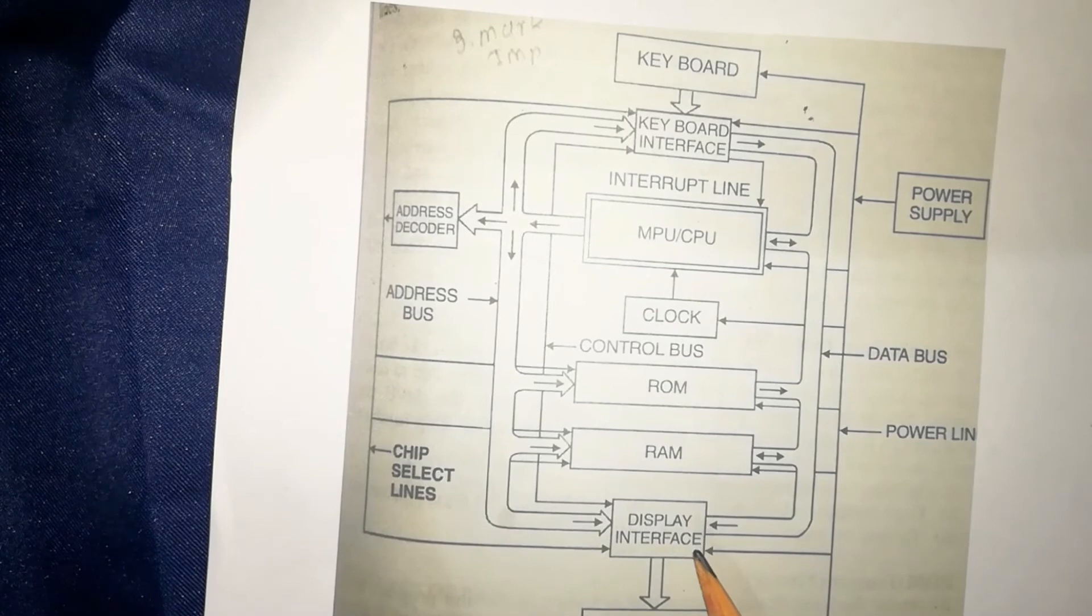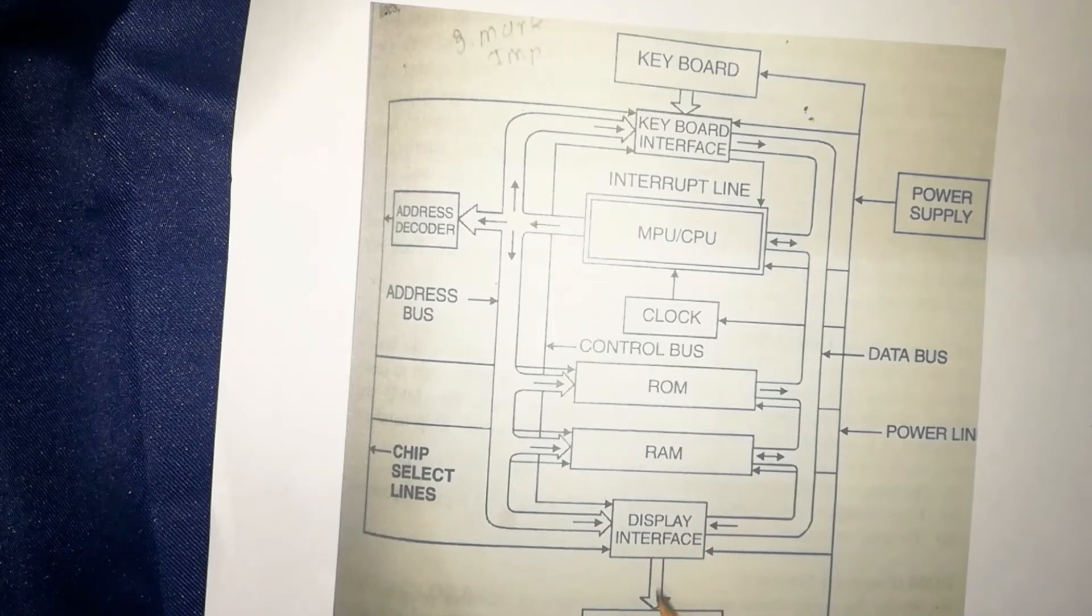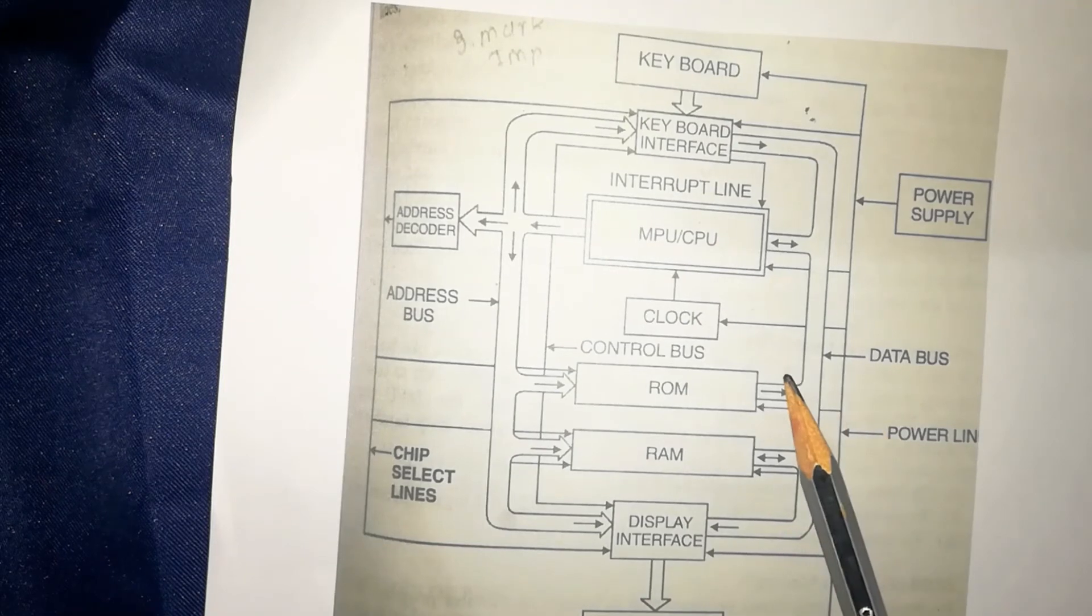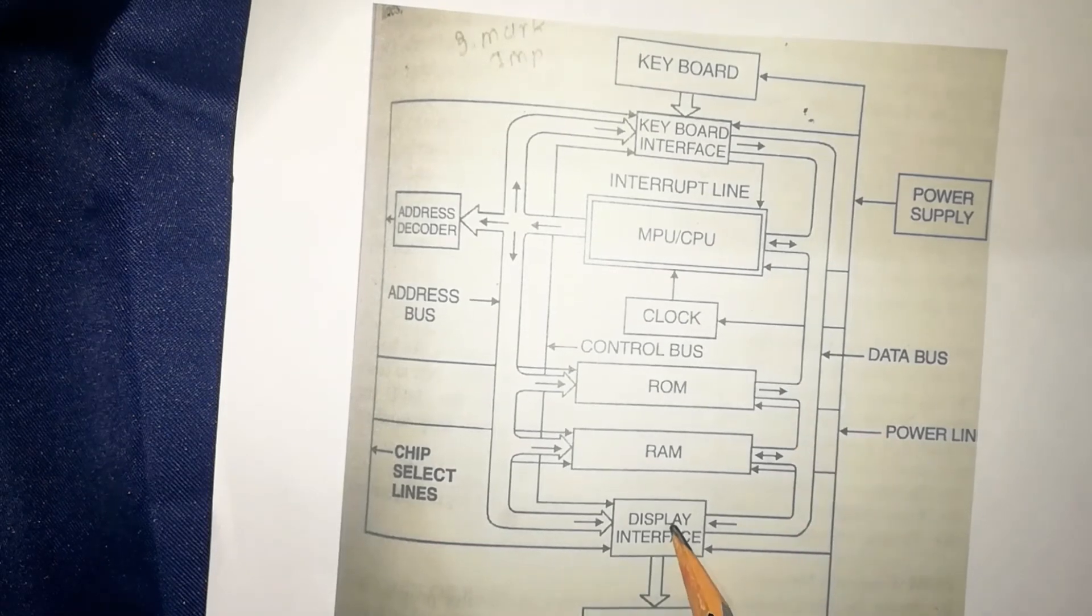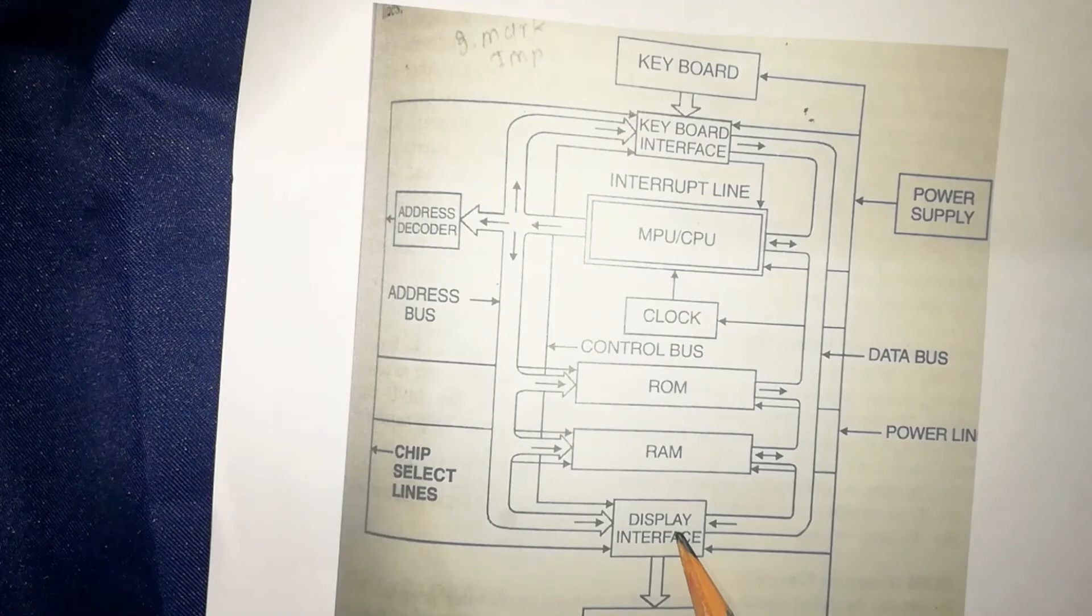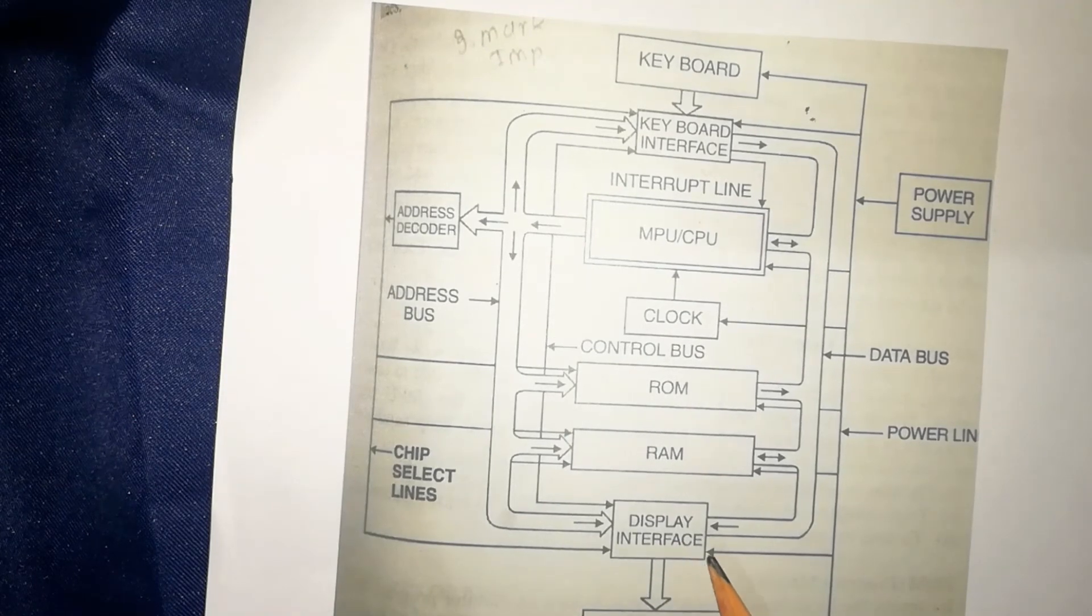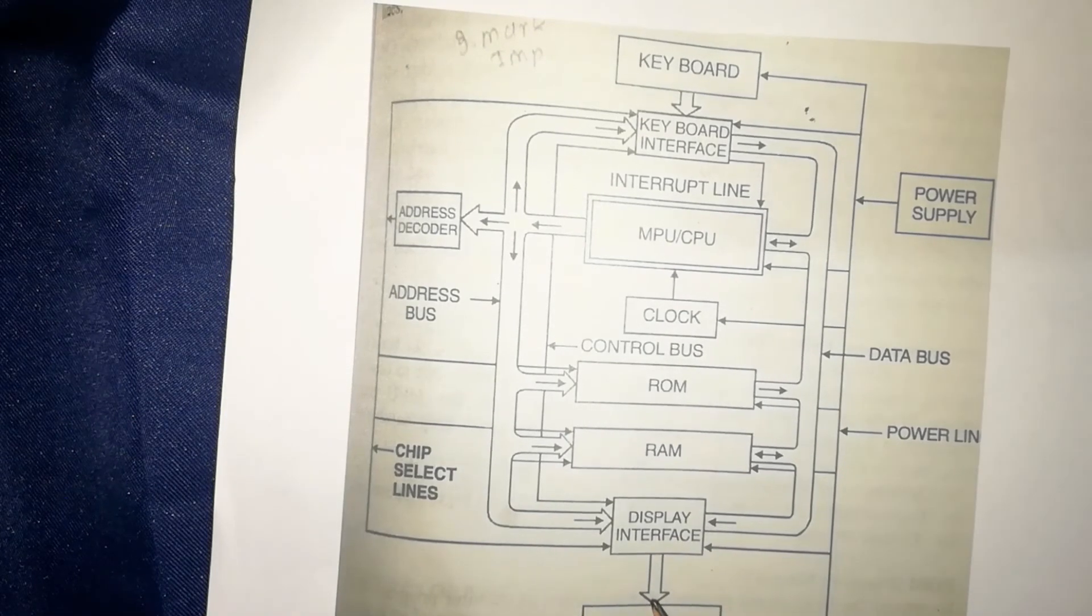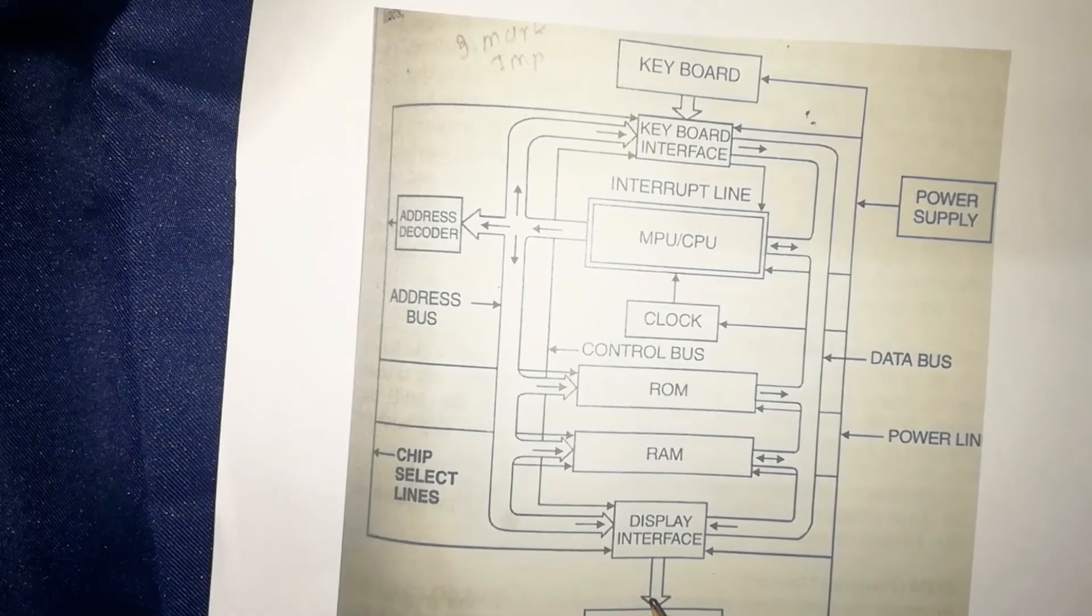Then the next unit is output device, which is display that is connected with display interface. The data from other devices is stored in display interface, then this display interface sends the data to display device, that is monitor.